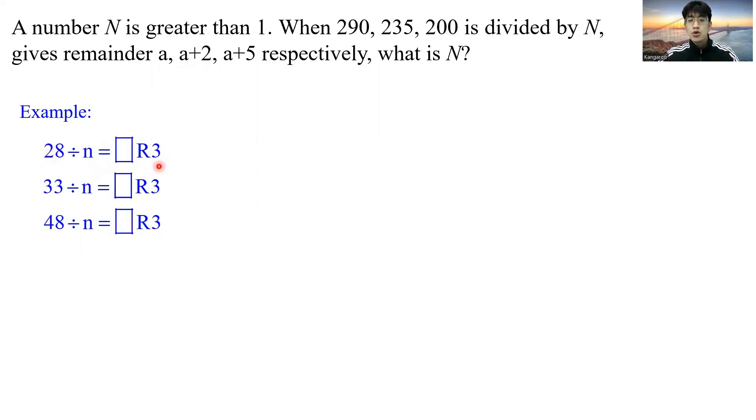Well, the first equation is equivalent to, if I have 28, it is equal to some amount of N's plus 3. This 3 is where this remainder comes from. Now, there'll be much more N's here than this N's here. And the same applies to the third equation. 48 equals some amount of N, which will be greater than this part, plus 3. How do we find N? We can simply take 33 minus 28, because if I take 33 minus 28, on the right-hand side, these 3 and these 3 would cancel each other.